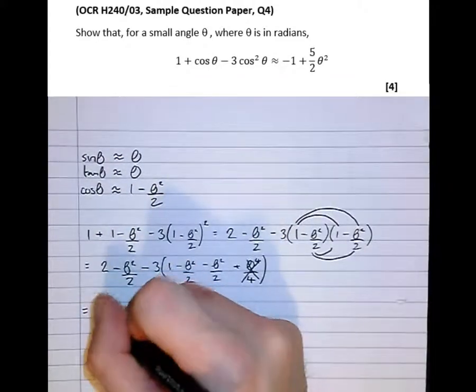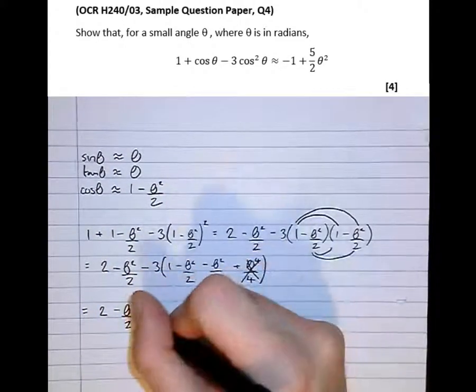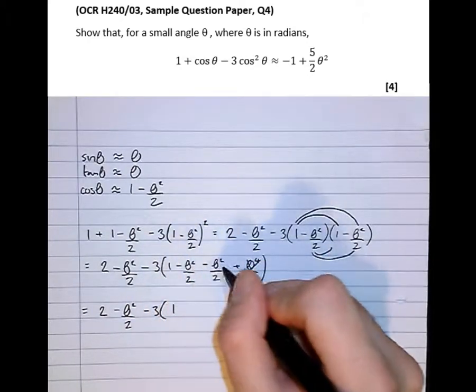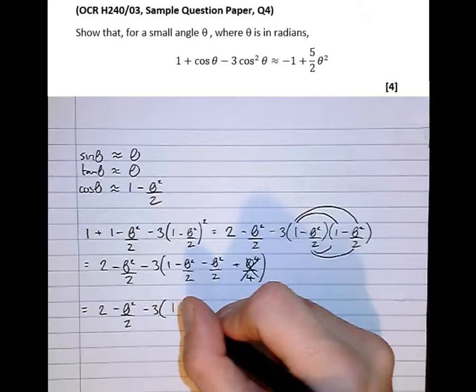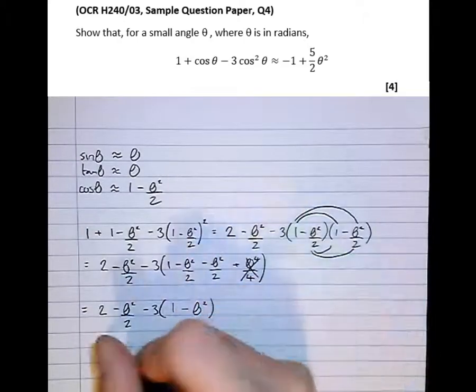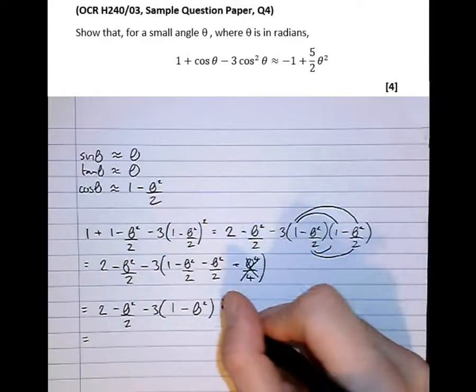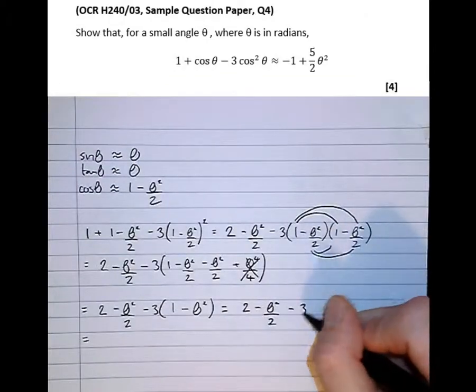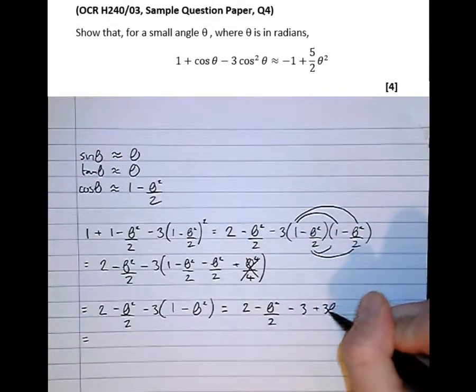Equals 2 minus theta squared over 2, minus 3 lots of, well, 1 and those 2 half theta squareds combine to make a negative theta squared. Keep going with that. So equal to 2 minus theta squared over 2, minus 3, plus 3 theta squared.